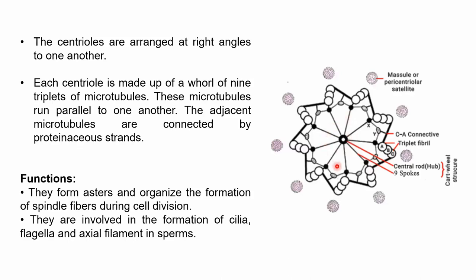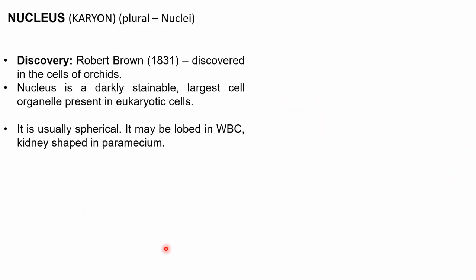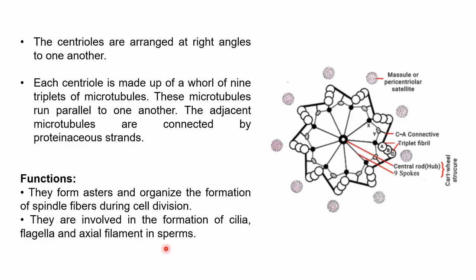The main function of centrioles is that they form asters and organize the formation of spindle fibers during cell division, which helps in the arrangement of chromosomes for cell division to take place. They are also involved in the formation of cilia, flagella, and axial filaments in sperms. Importantly, centrioles are present only in animal cells and are absent in plant cells.